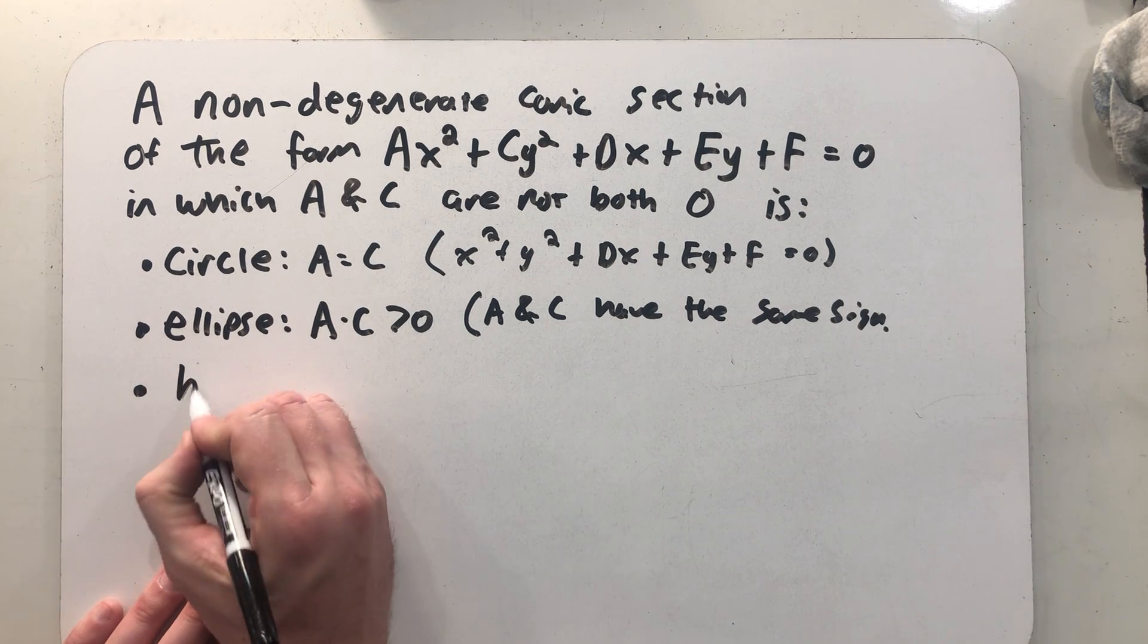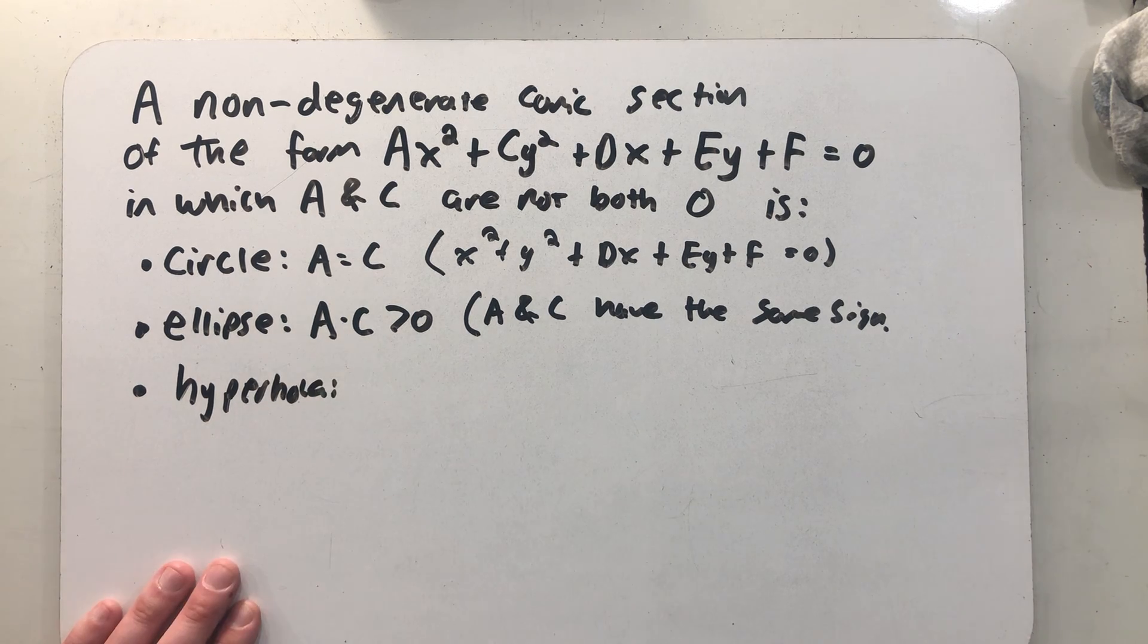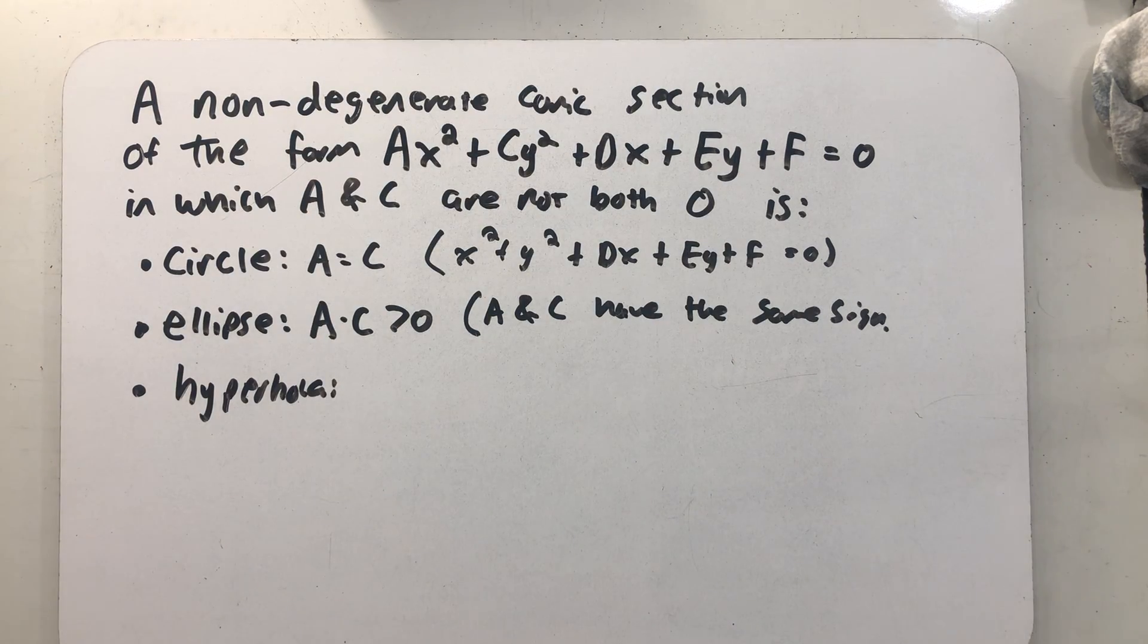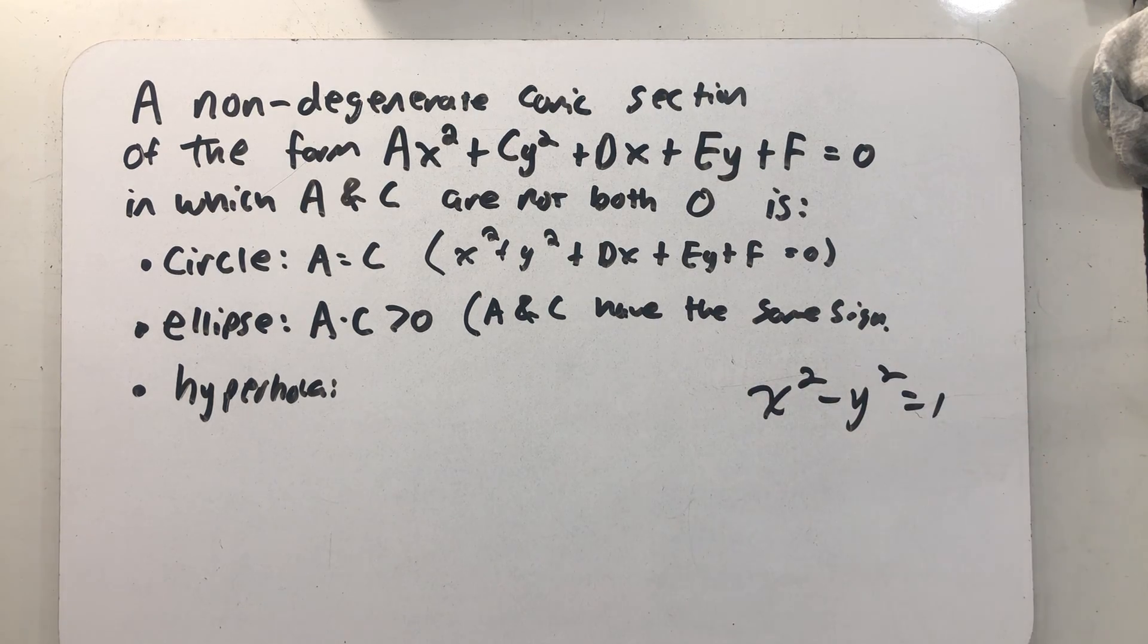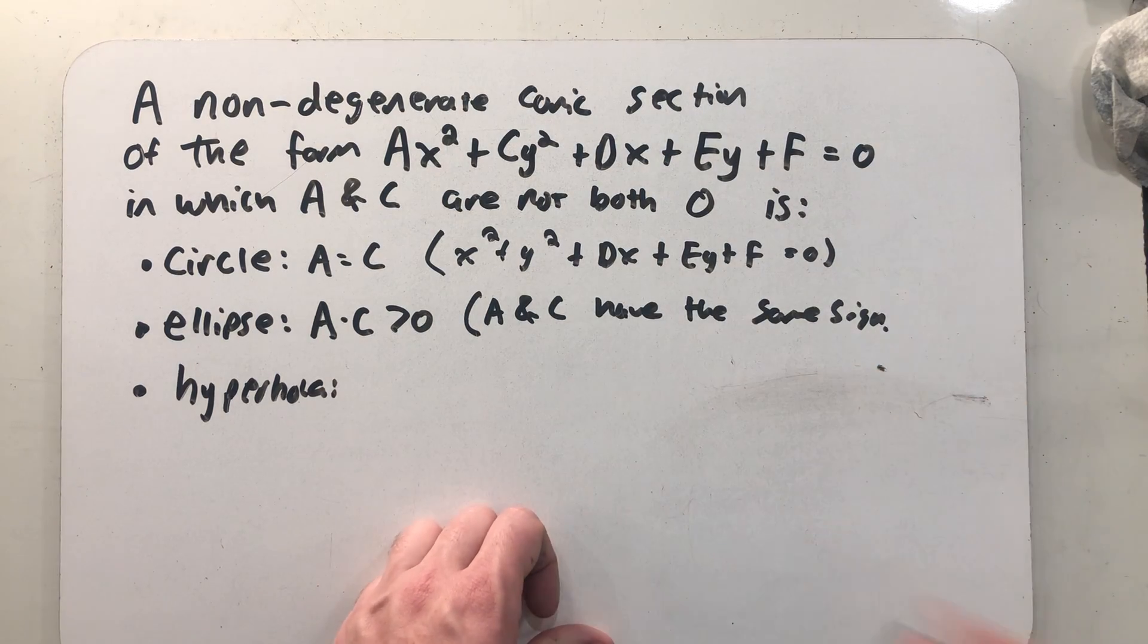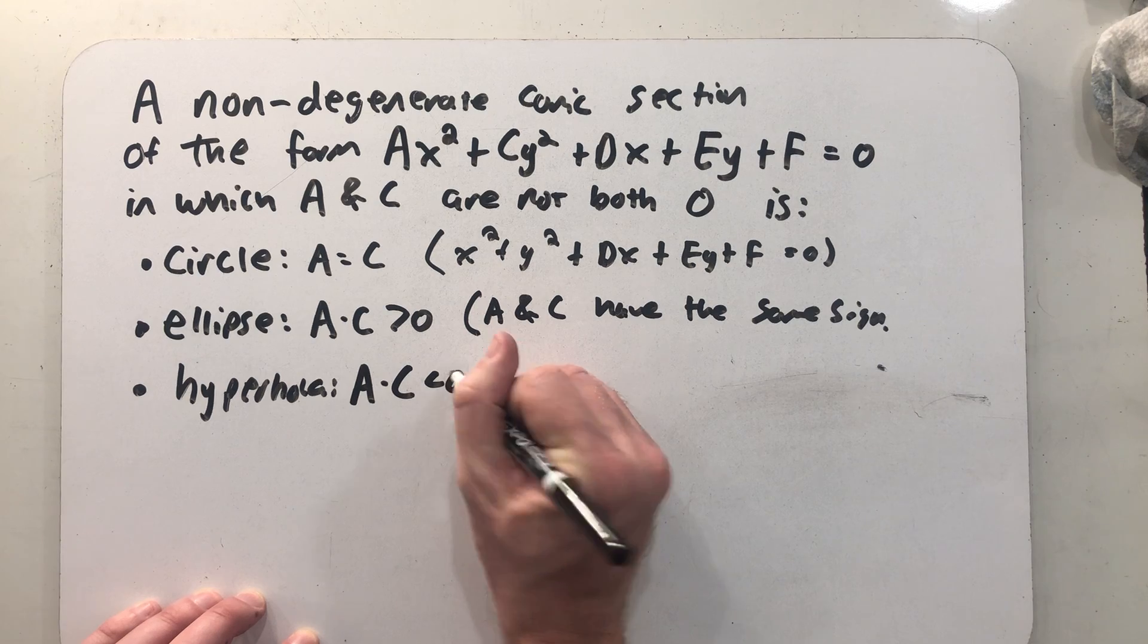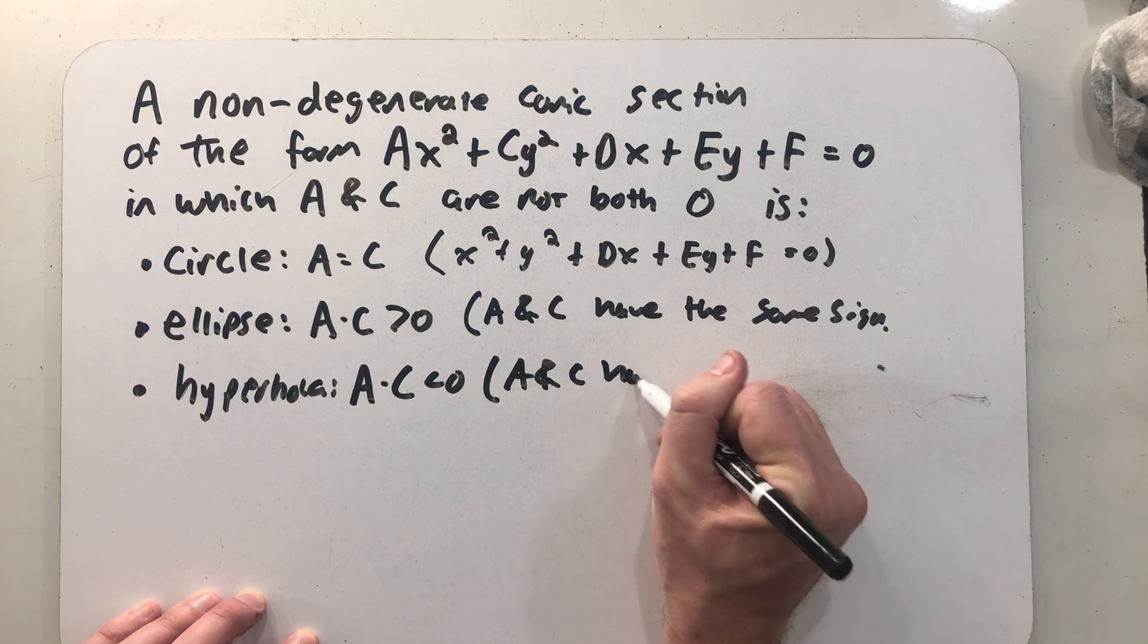All right, well, after the ellipse, I want to talk about the hyperbola. And I think y'all have already probably identified it. Right here, a and c are going to have opposite signs. One's going to be positive, one's going to be negative. So I see that opposite signs thing that I expect with a hyperbola in its standard form. And so a and c have opposite signs, and a times c is less than zero. We can just make that same note: a and c have different signs.